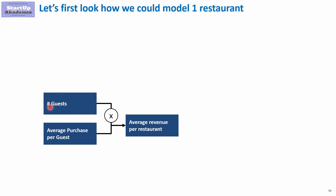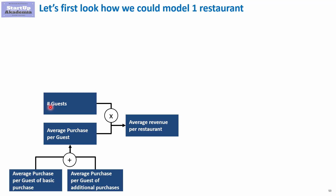Here we mean one guest, one visit. When we look at the purchase during the visit, it consists of first the average purchase of the basic things the guest came to buy, and then additional things we managed to convince them to buy.